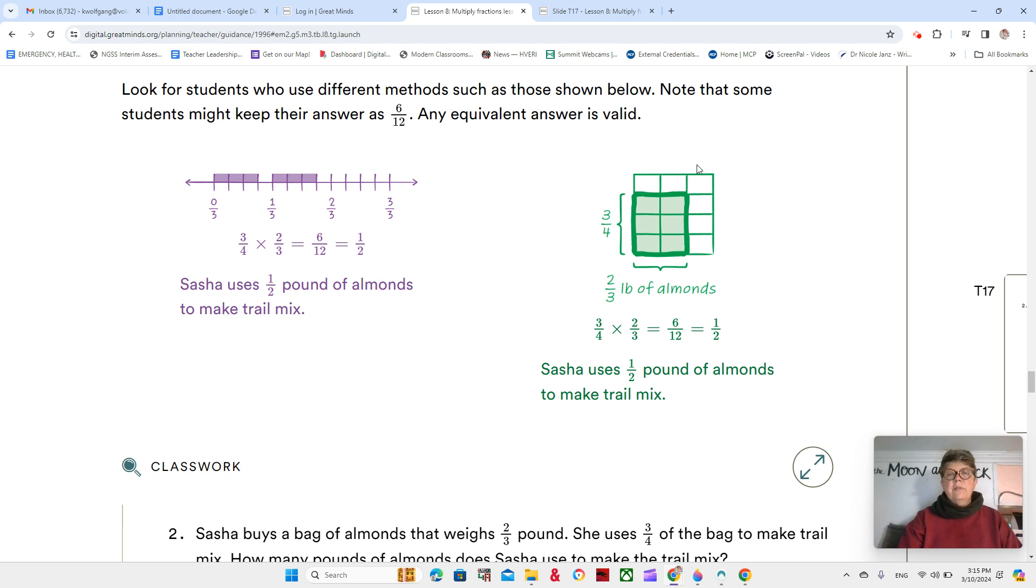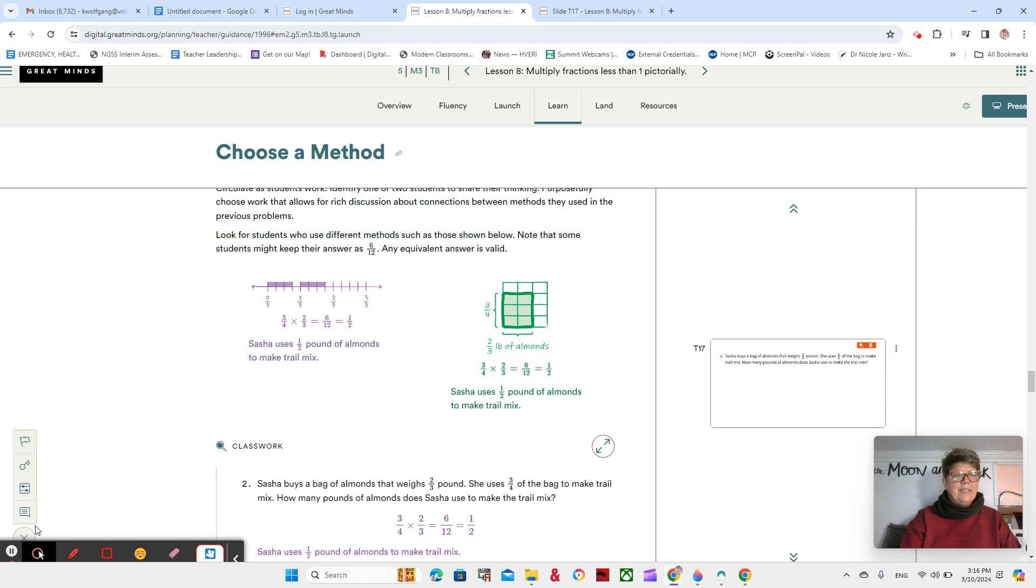We can do the same thing with our square here. We're going to show two thirds. So we're going to have three sections with two of them colored in, and then we're going to have four sections with three of them colored in. We only look at the overlap because we're taking three fourths of our two thirds. And that also shows one half. So like I said, make sure that you are showing your work in either a number line or an area model. You can do both if you want to, that's up to you. Thanks for paying such great attention. I'll see you in the next video.